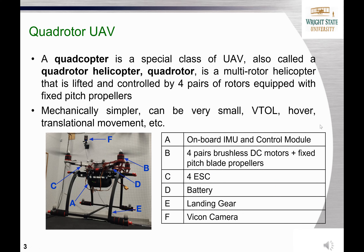In this course, we will focus on a type of UAV called a quadcopter, or mostly known as a drone. It's a multi-rotor helicopter that is lifted and controlled by four pairs of rotors and propellers. It's mechanically simple, small in size, and can conduct various maneuvers.